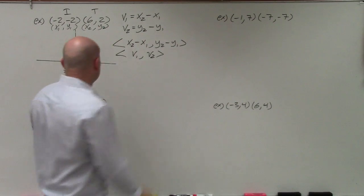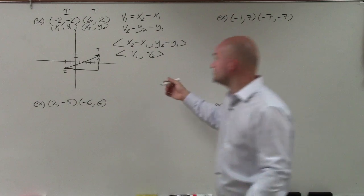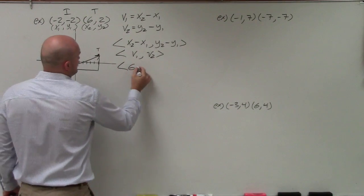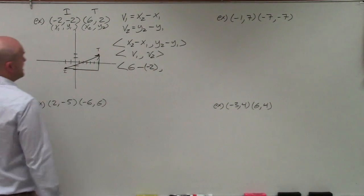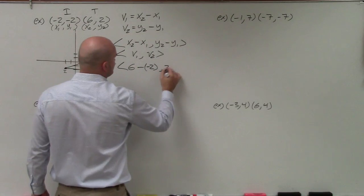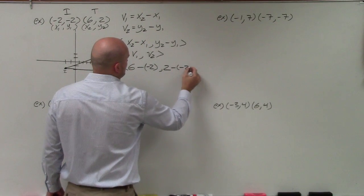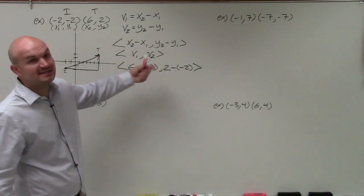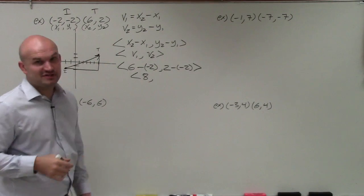So now, all we need to do in this vector to write the component form is we just need to find the difference of these two. So I'll go back to this. x2 is equal to 6. x1 is equal to negative 2. I'm going to put that in parentheses so I don't mess up my signs. y2 is 2. And y1 is negative 2. Now, we just need to do a little math. 6 minus negative 2 is 8. 2 minus negative 2 is 4.